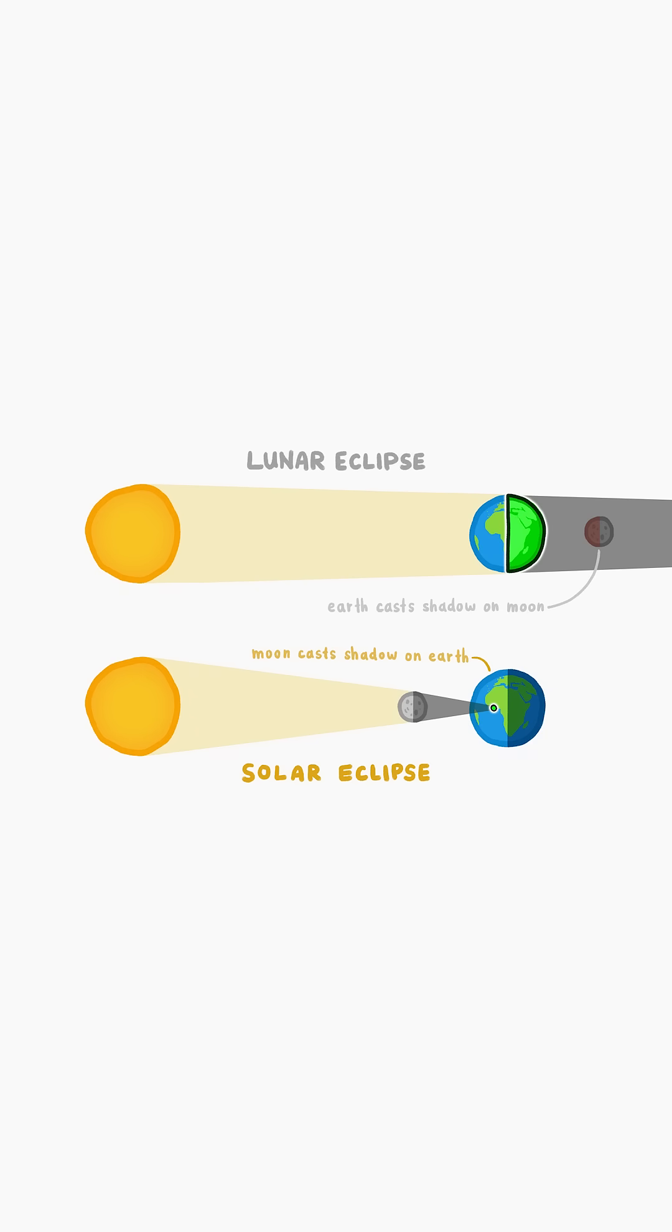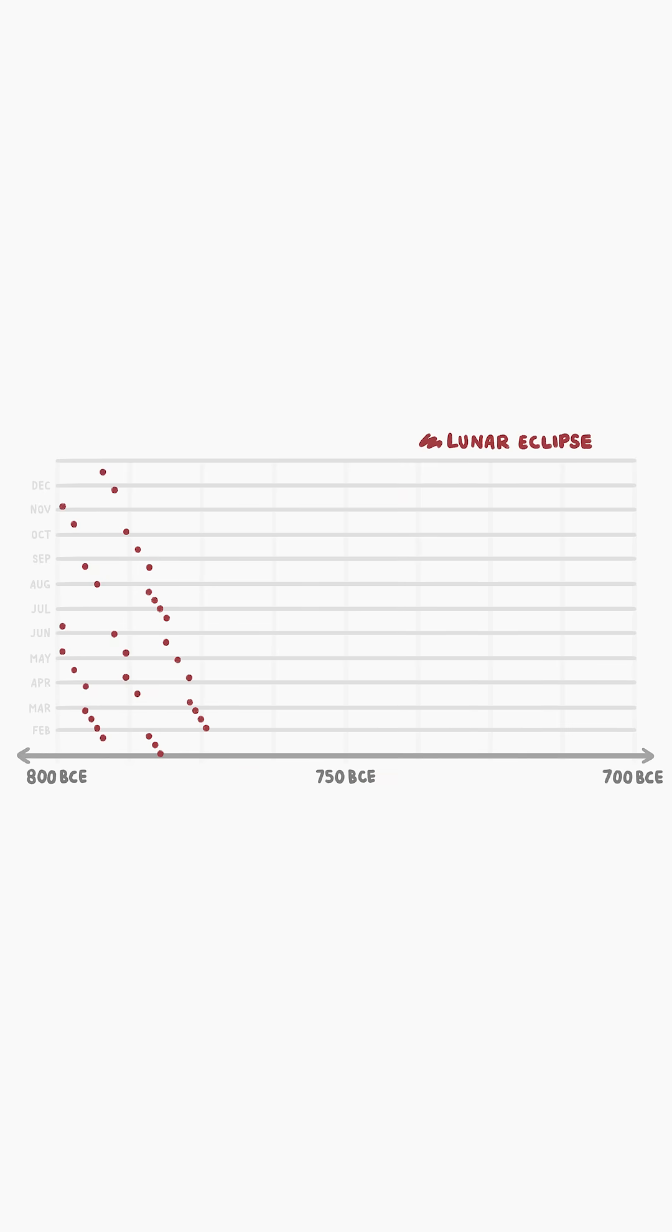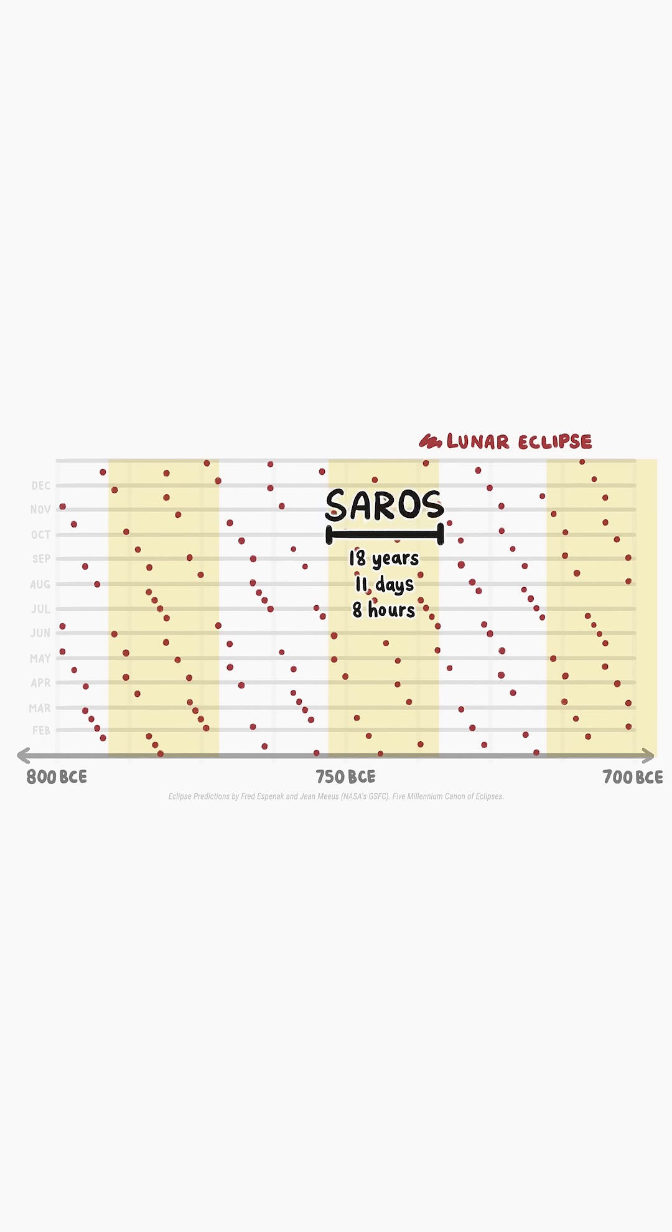So astronomers would see roughly half of the lunar eclipses that happened, as opposed to only a handful of solar eclipses. That gave the astronomers enough data to figure out that lunar eclipses seem to repeat every 18 years, 11 days, and 8 hours, a pattern which we now call the Saros.